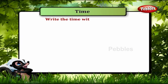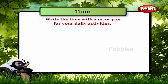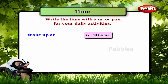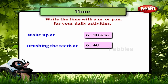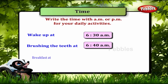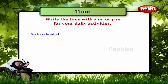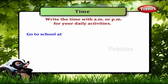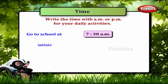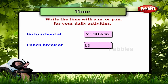Write the time with A.M. or P.M. for your daily activities. You wake up at 6:30 A.M. You brush your teeth at 6:40 A.M. Breakfast at 7:00 A.M. Go to school at 7:30 A.M. Lunch break at 11:00 A.M.